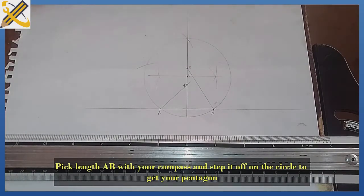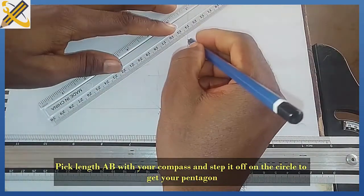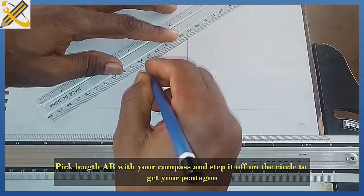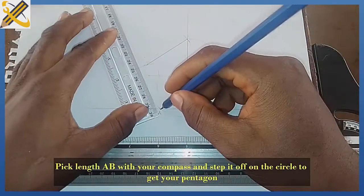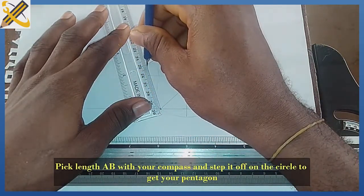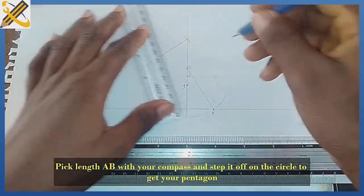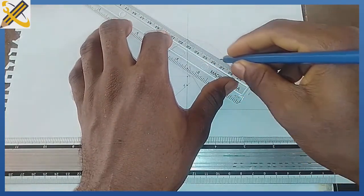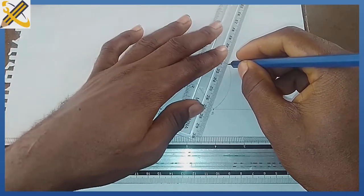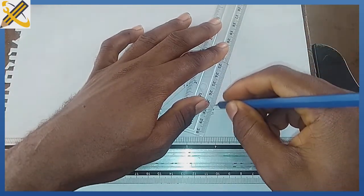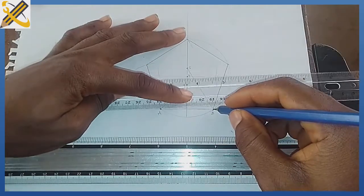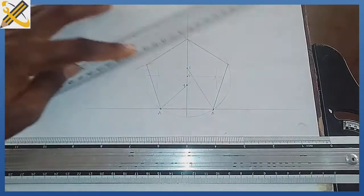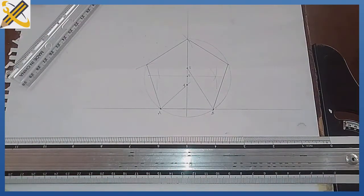Having done that, the next procedure is to pick my ruler and my pencil, then join each of those points together with a straight line. This is a pentagon.